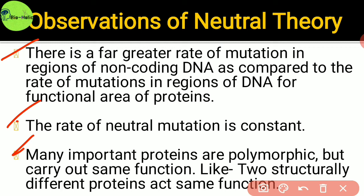Polymorphism can occur due to gene duplication, gene loss, gene fusion, etc. This is also one of the important facts about neutral theory.